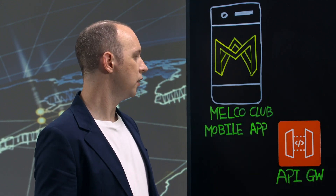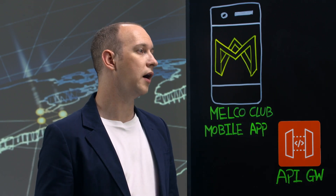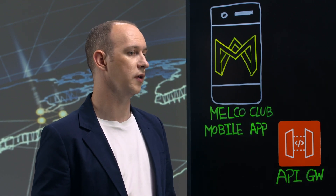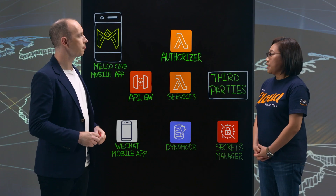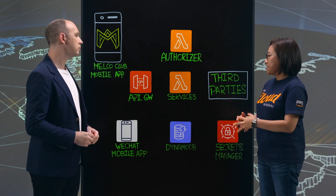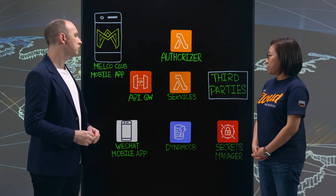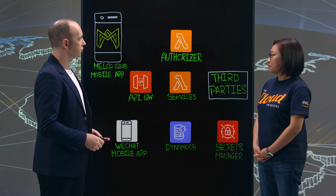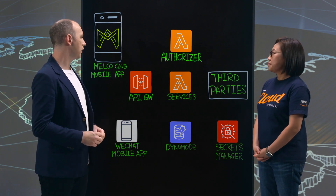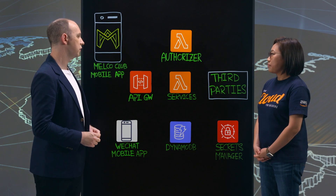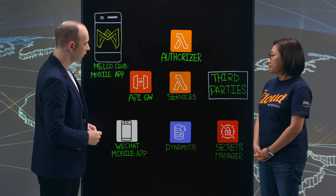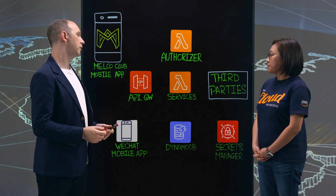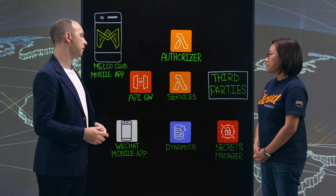We also have it in a standard iOS or Android application, which is predominantly for our international market. So what does the high level solutions architecture look like? At a high level, we went with a serverless architecture. It involves services such as API Gateway, Lambda and DynamoDB, along with other key third-party services.